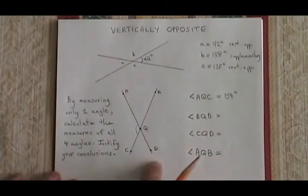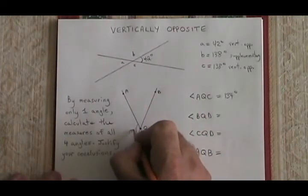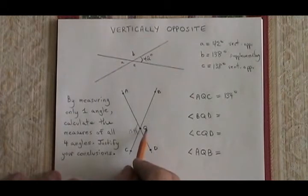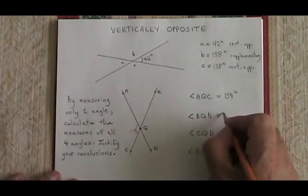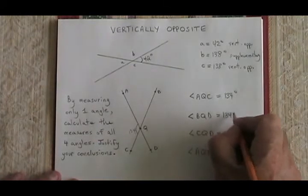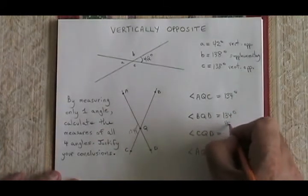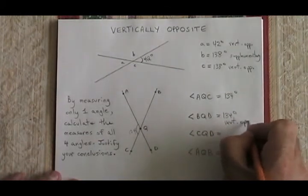Angle BQD, though, is vertically opposite to angle AQC. So therefore, angle BQD must also be 134 degrees. To justify, I use vertically opposite. That's the rule I applied.